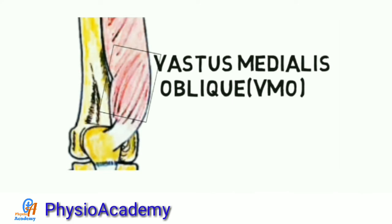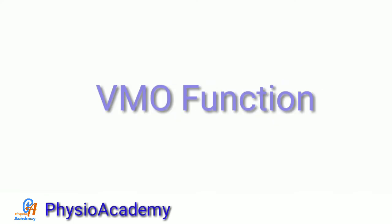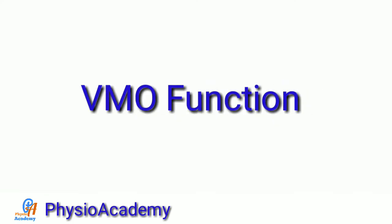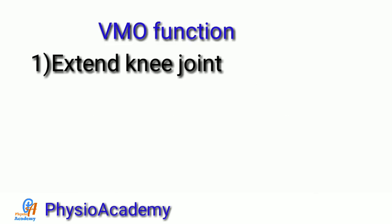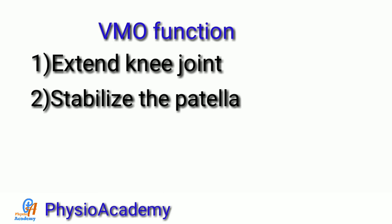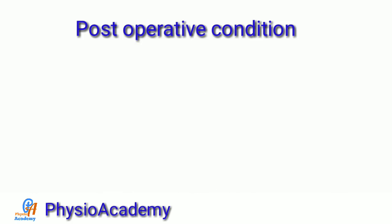Function of VMO vastus medialis oblique muscle: extend the knee joint and its work is to stabilize the patella. In which condition does VMO get weak? Post-operative conditions like any surgery in the knee joint for bone fracture, ligament reconstructive surgery, or joint replacement surgery.